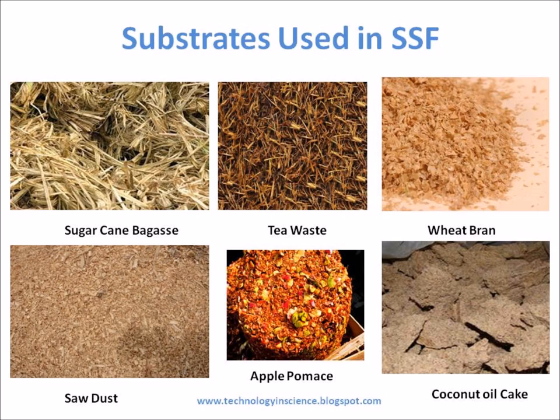Oil cakes include coconut oil cake, palm kernel cake, soybean cake, and groundnut oil cake, etc. Other substrates include fruit pulps like apple pomace, corn cobs, sawdust, seeds, coffee husk, coffee pulp, tea waste, spent brewing grains, etc.